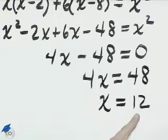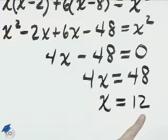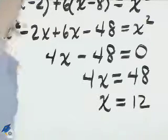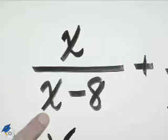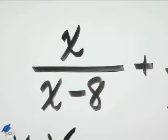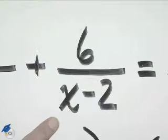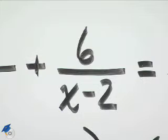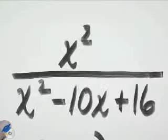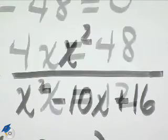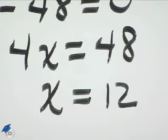And be sure that this solution is okay in the original equation so that we don't get a denominator of 0. 12 minus 8 is 4, so that's okay. 12 minus 2 is 10, and so that's okay. And if 12 is the value of x here, that will not be 0 in the denominator. So x equals 12 is our solution.